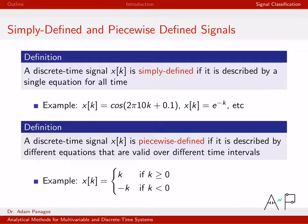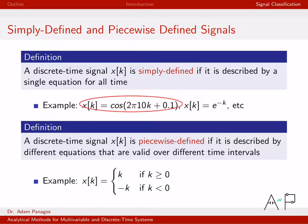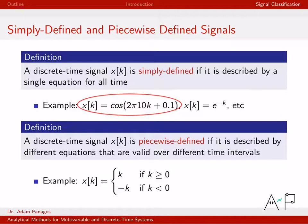Simply defined: we say that a discrete time signal x of k is simply defined if it can be written as a single equation for all time. As an example, x of k equals cosine(2π·10k + 0.1). This is a single equation for x of k that holds for all time k. No matter what value for k you're given, you plug it into this single equation.